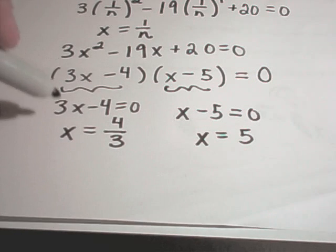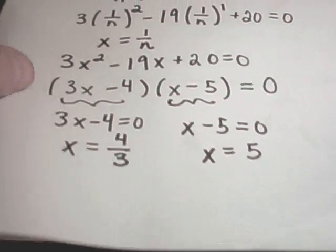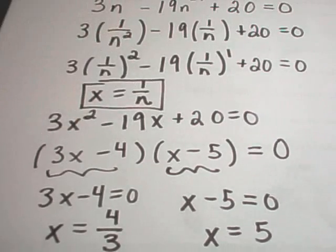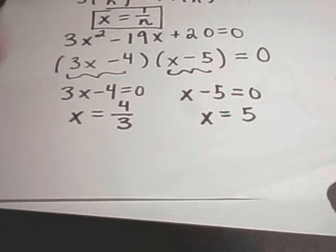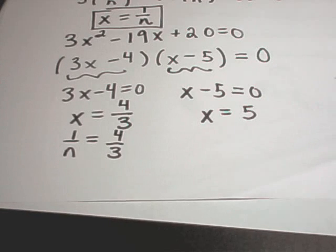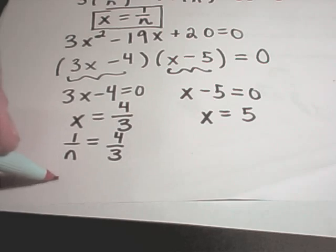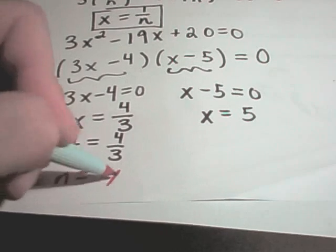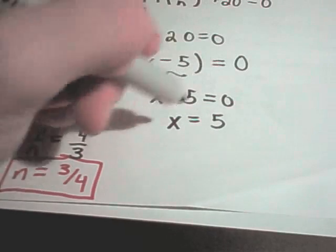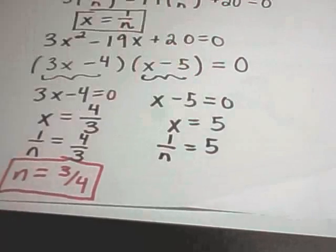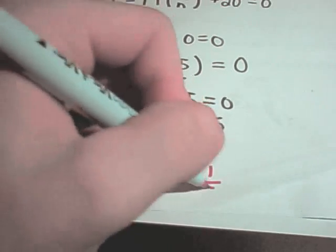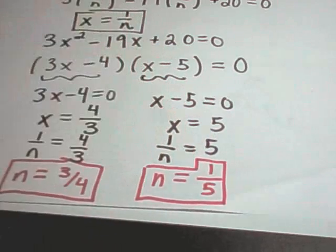Our original problem didn't involve x — it involved n's. We know that x is equivalent to 1 over n. So I'll plug that back in: 1 over n equals 4/3. Flipping the fraction, we get n equals 3/4 as one solution. Likewise, for the other solution, 1 over n equals 5. Solving for n by multiplying by n and dividing by 5, we get n equals 1/5 as our other solution.